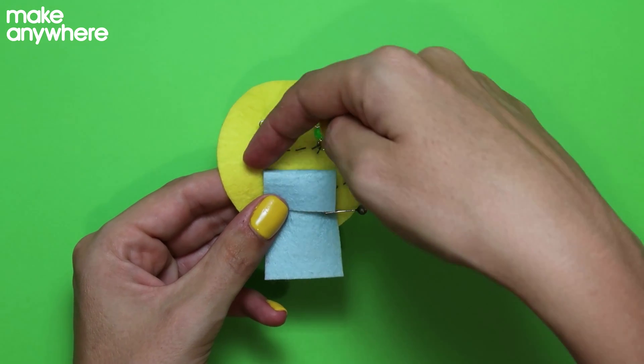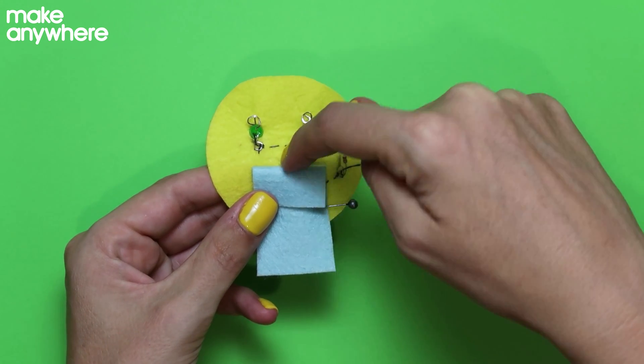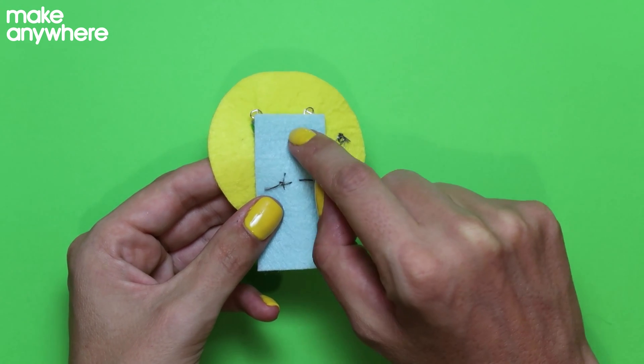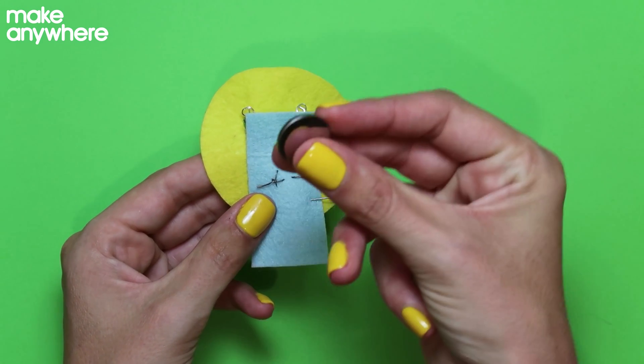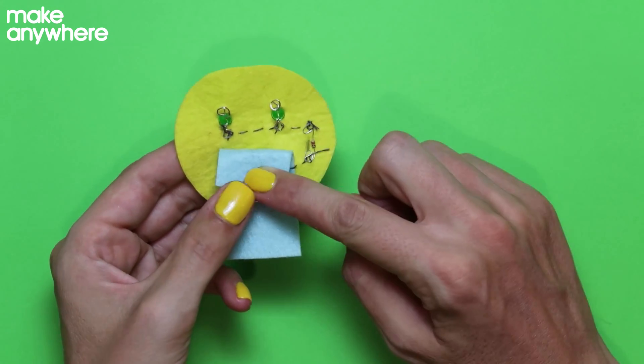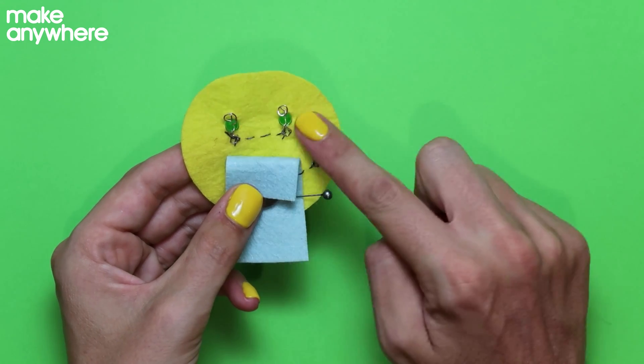Then we're going to stitch down, across on the yellow and then up onto the blue part here. Finishing with a cross here. So when we stick our cell battery in, the negative side will go down. This will flap over and touch the positive side, lighting up our LEDs.